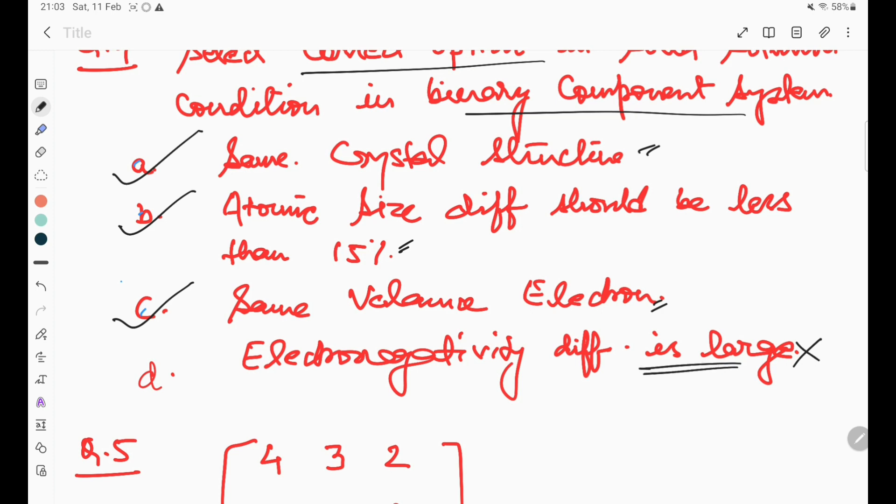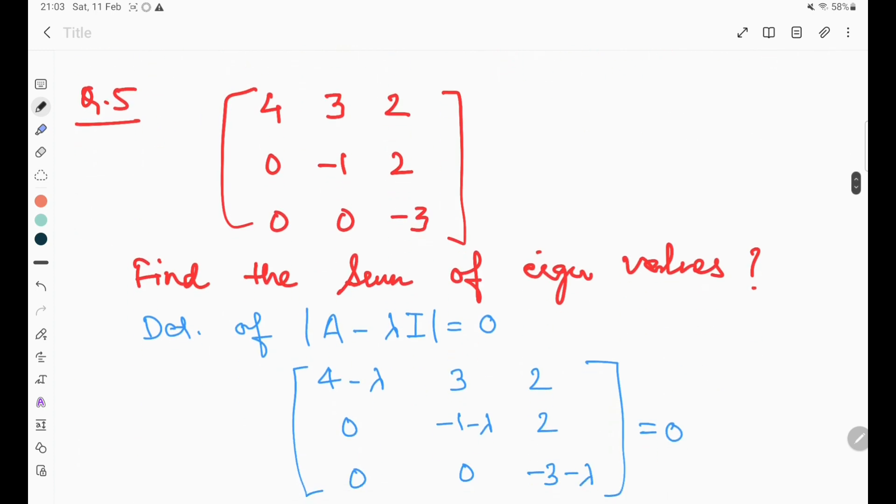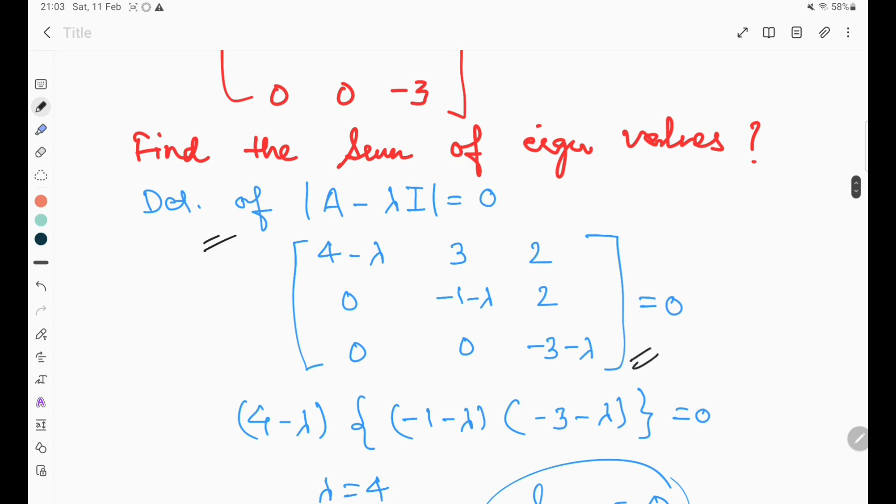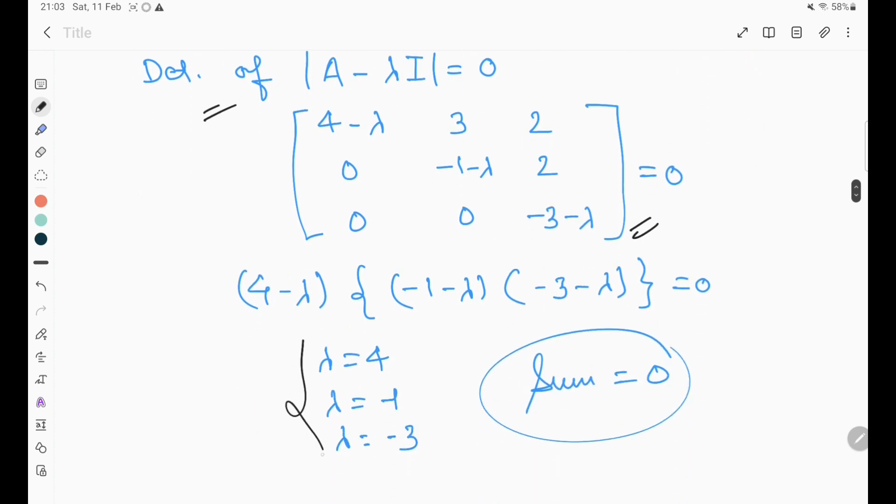Question number five: find the sum of eigenvalues. The determinant of A minus lambda equals zero. By solving this determinant, we find these eigenvalues. The sum of these eigenvalues equals zero, so zero is the answer.